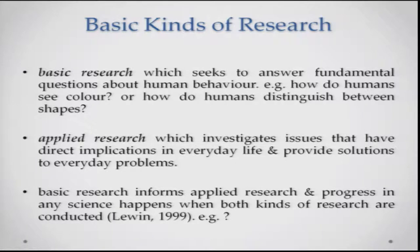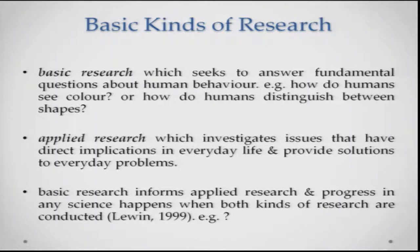Primarily there are two kinds of research methods. First is basic research, which actually seeks to answer fundamental questions about human behavior — something very specific and simple, say for example how humans see color or how humans distinguish between two kinds of shapes. Another variety is applied research, which investigates issues that have direct implications in everyday life. It borrows from the findings of basic research and puts them to use in solving everyday problems. Basic research informs applied research, and progress in any science happens only when both kinds of research are conducted.